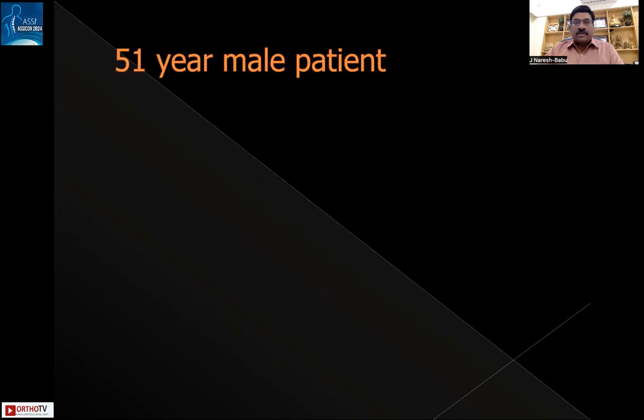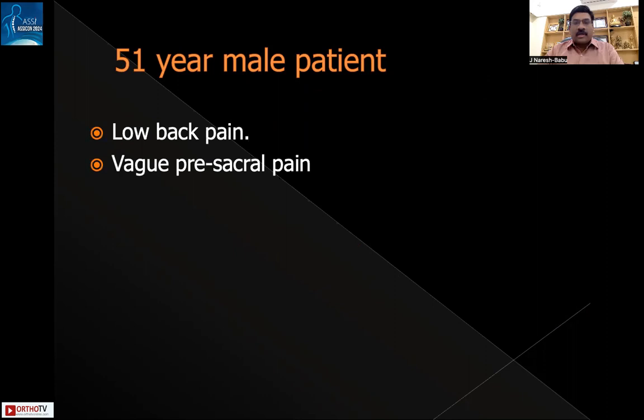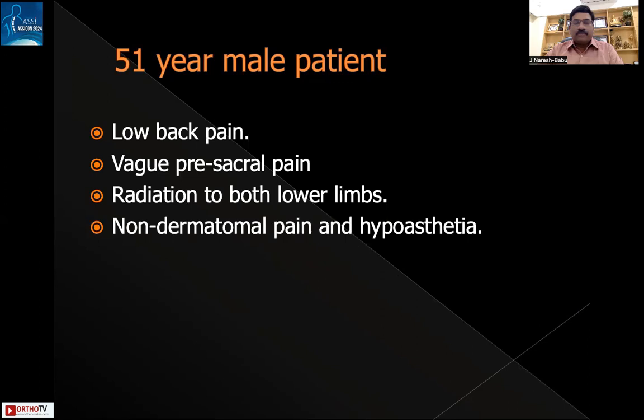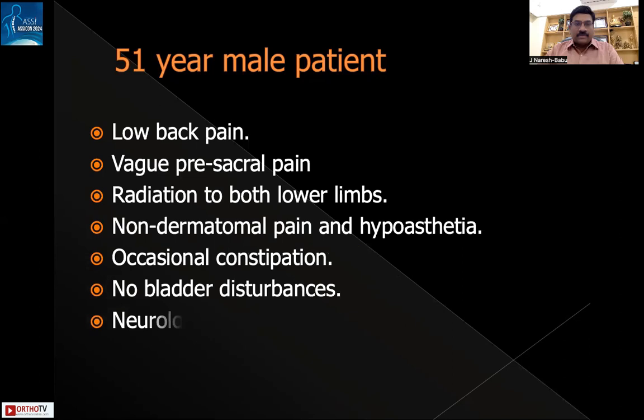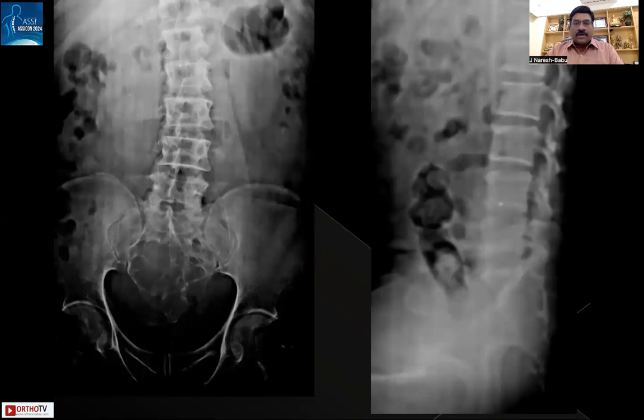The patient is a 51-year-old male presenting with low back pain and vague pre-sacral pain with radiation to both lower limbs in a non-dermatomal pattern. He has some hypoesthesia in the lower limbs and an occasional history of constipation. There were no bladder disturbances and neurologically the patient is otherwise normal.